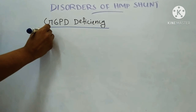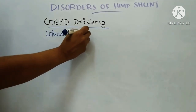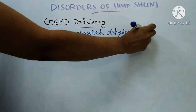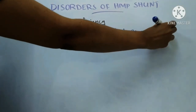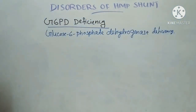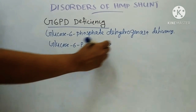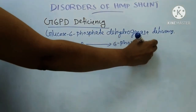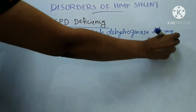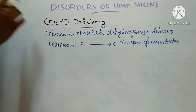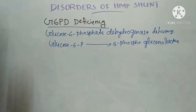G6PD means glucose-6-phosphate dehydrogenase deficiency. This glucose-6-phosphate dehydrogenase enzyme normally catalyses the conversion of glucose-6-phosphate to 6-phosphogluconolactone. This is the first step in the HMP pathway and it is the rate-limiting step. Glucose-6-phosphate dehydrogenase is the rate-limiting enzyme in the HMP pathway.